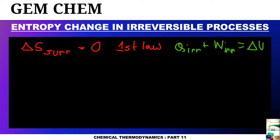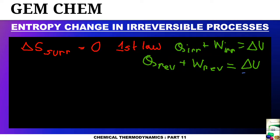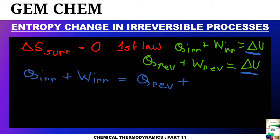Similarly, for a reversible case we can write: q reversible plus work reversible equals delta U. Since both equal delta U, q irreversible plus W irreversible must equal q reversible plus W reversible. The magnitude of reversible work is always greater in the case of expansion, and its sign is negative. So if W reversible is greater, then q reversible must always be greater than q irreversible.